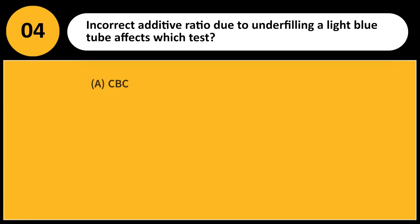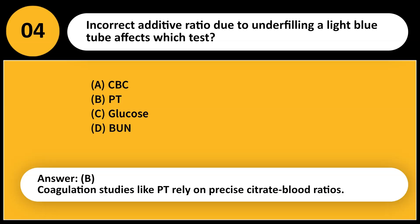Incorrect additive ratio due to underfilling a light blue tube affects which test? A. CBC. B. PT. C. Glucose. D. BUN. Answer: B. Coagulation studies like PT rely on precise citrate-to-blood ratios.